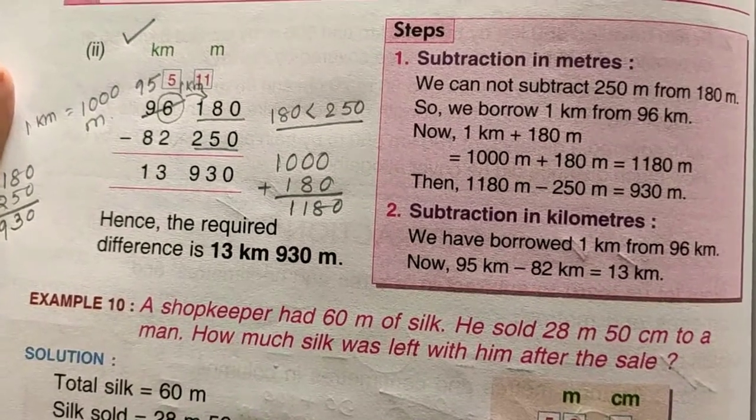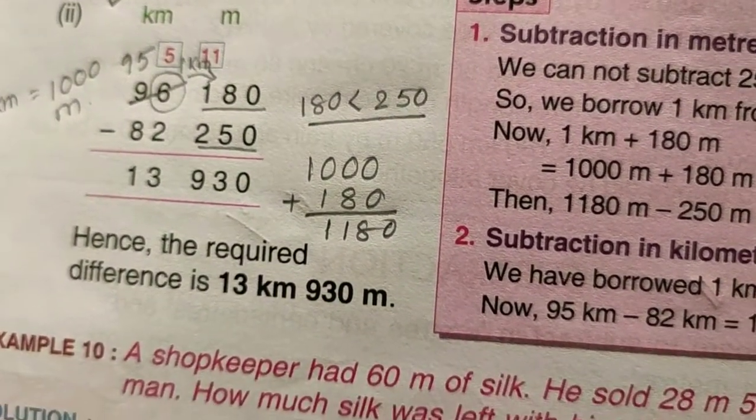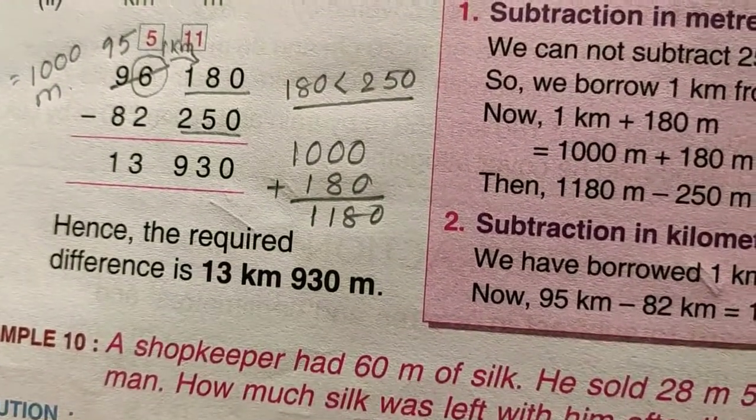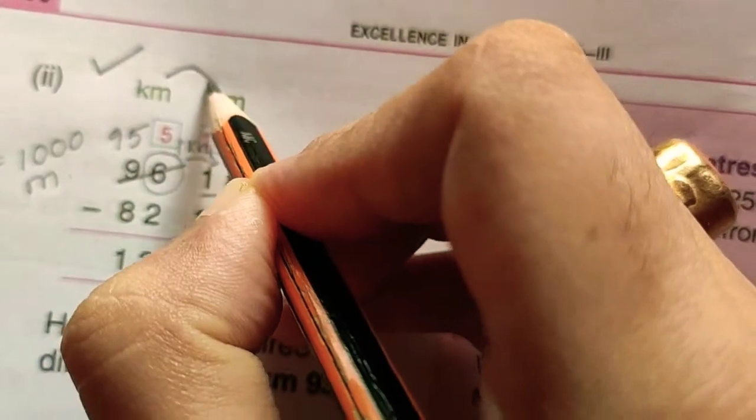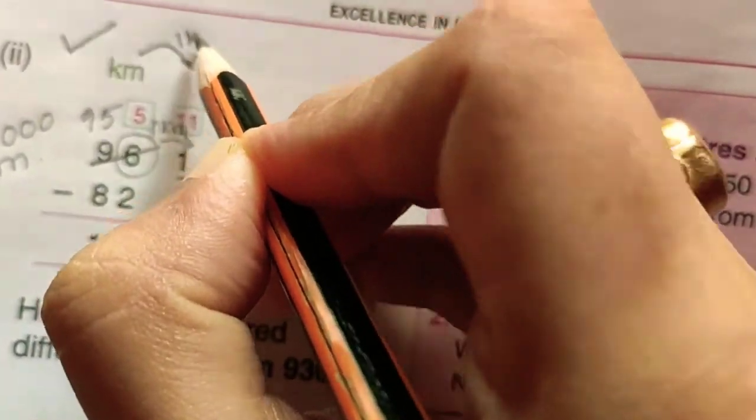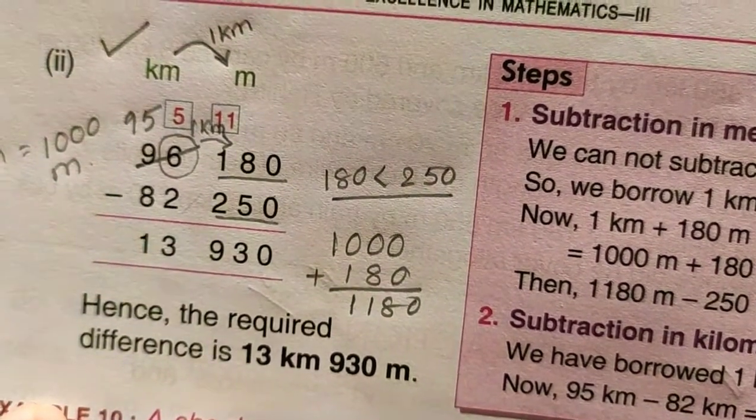Here what did we do? We borrowed value from kilometer to meter. Inter-column borrowing is happening, borrowing between columns. But here we are borrowing from kilometer to meter. Clear?